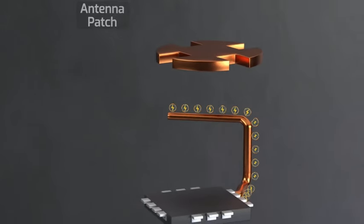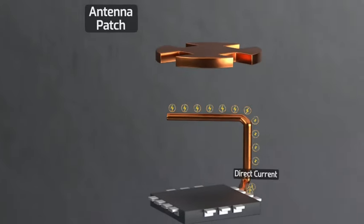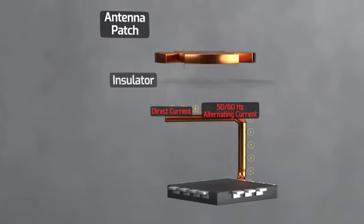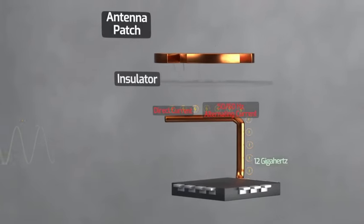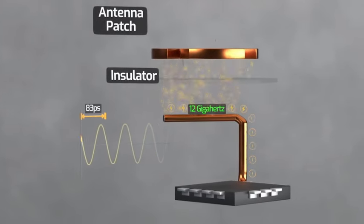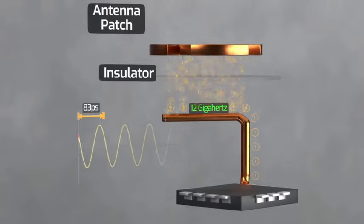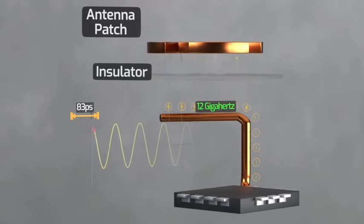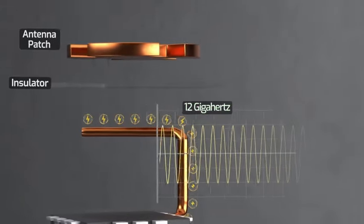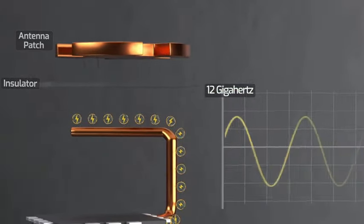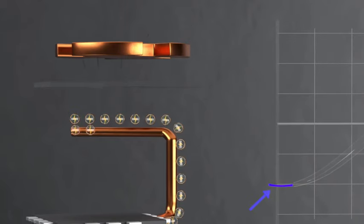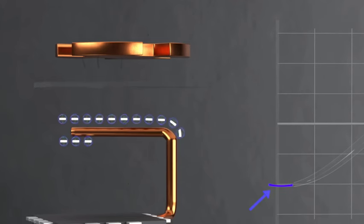Note that high frequency electricity works differently from direct current or low frequency, 50 or 60 hertz household electricity. For example, above the copper feed wire, we have a copper circle with notches cut into it called an antenna patch. With DC or low frequency alternating current, there wouldn't be much happening because the patch is isolated, but with a high frequency signal, the power sent to the feed wire is coupled or sent to the patch.